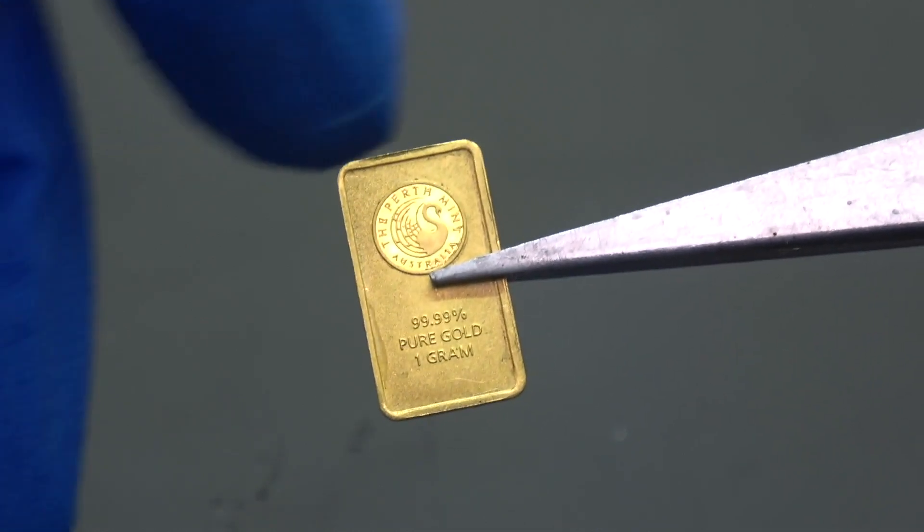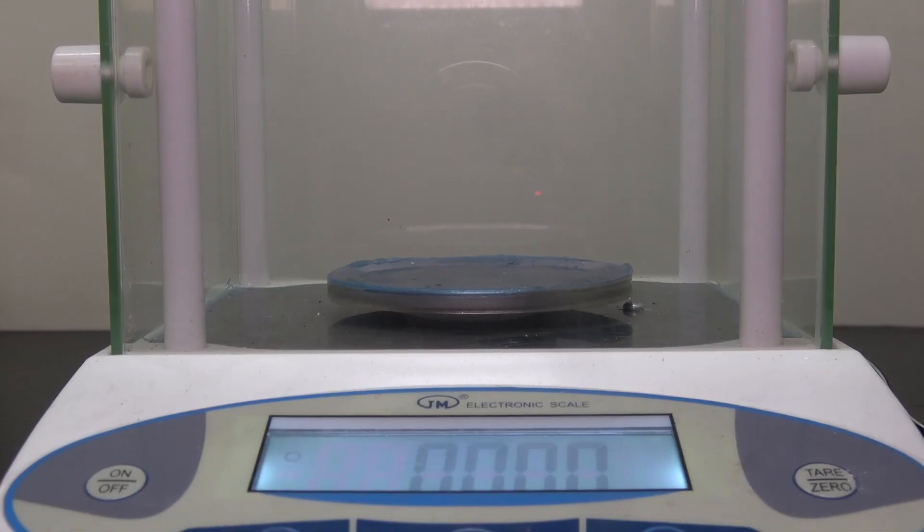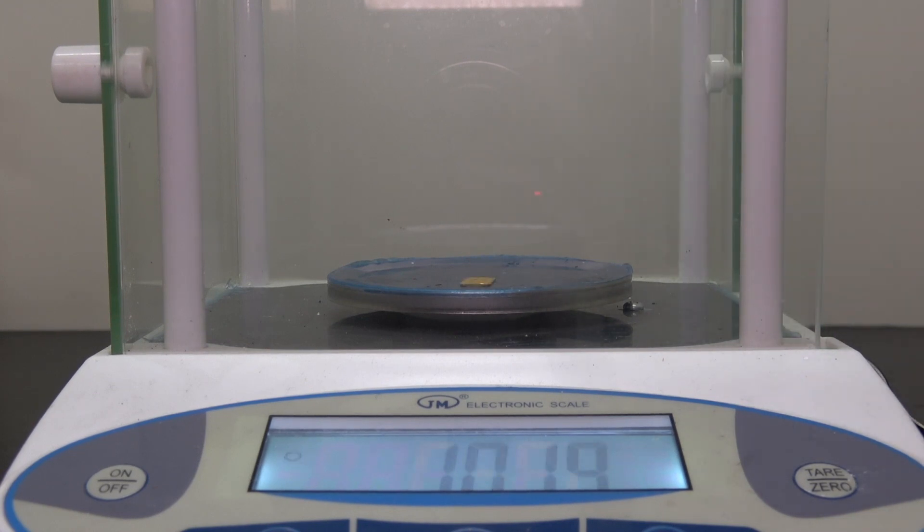Anyway, the gold bar is finally free from its imprisonment and ready for some abuse. Before we actually do that, let's weigh it first. That way we can determine whether or not there is a loss of mass. Looks like I have 2.1% more gold than I actually paid for. That honestly just made my day.